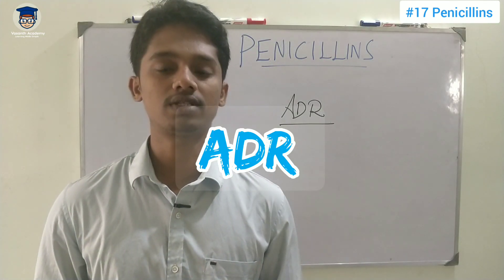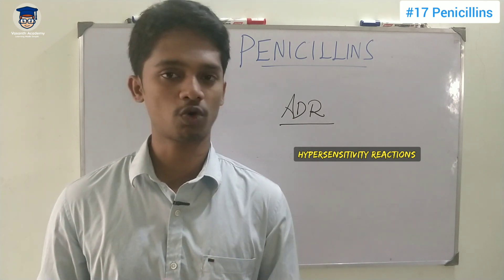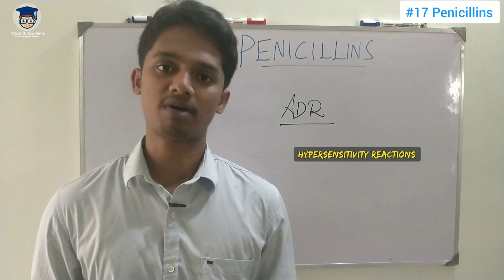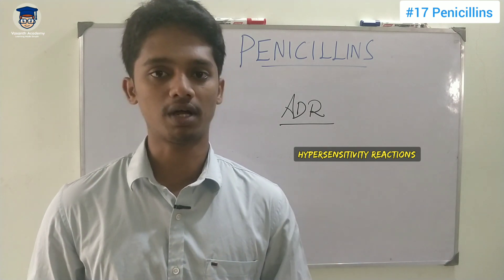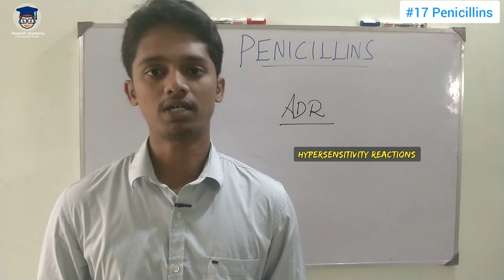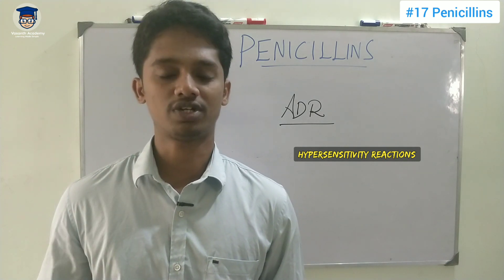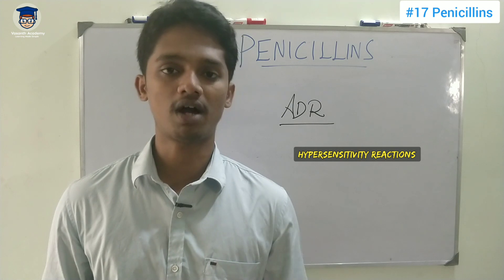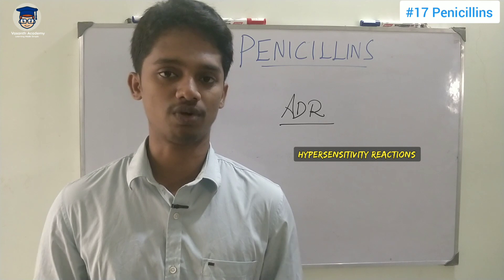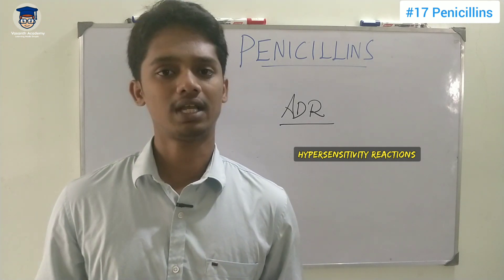Penicillins are highly safe drugs with a high therapeutic index. That is why the adverse profile is very low. But most natural penicillins have very low oral bioavailability, while some require IV administration. The drug is very safe overall. One major side effect, however, is a hypersensitivity reaction. If the drug is taken into the body, it can trigger an immune response, producing allergic reactions. This is the major side effect of penicillin; other side effects are mild.